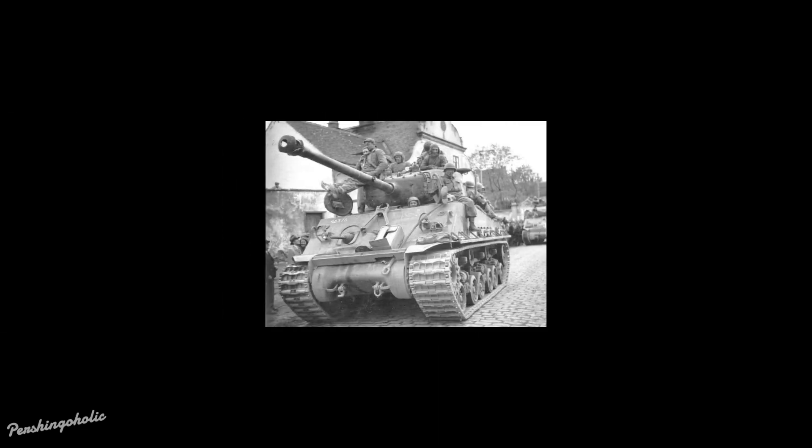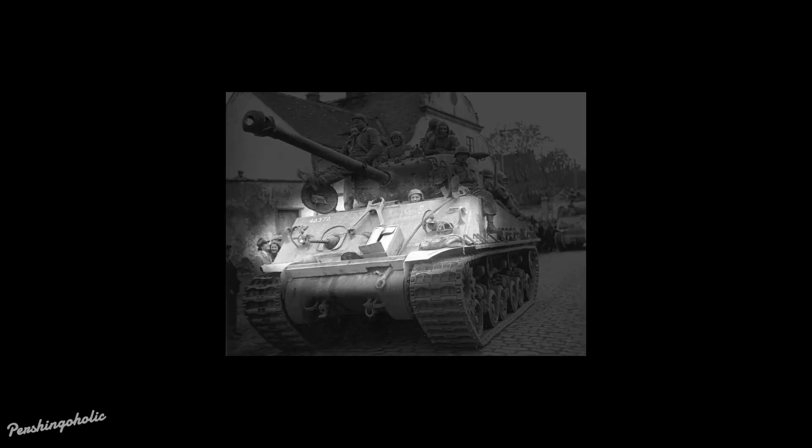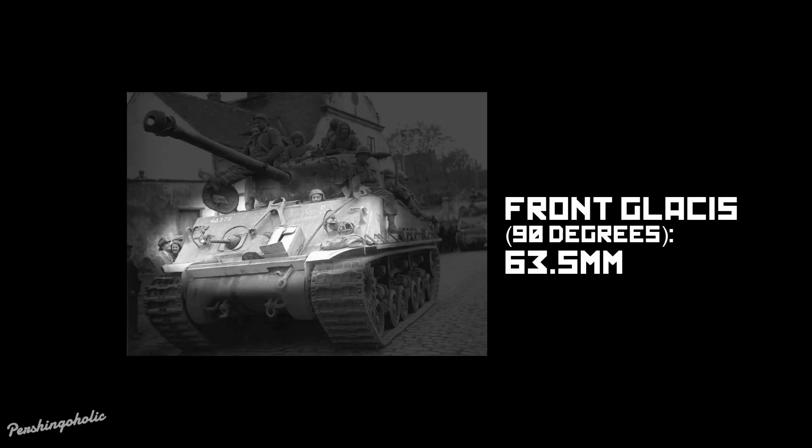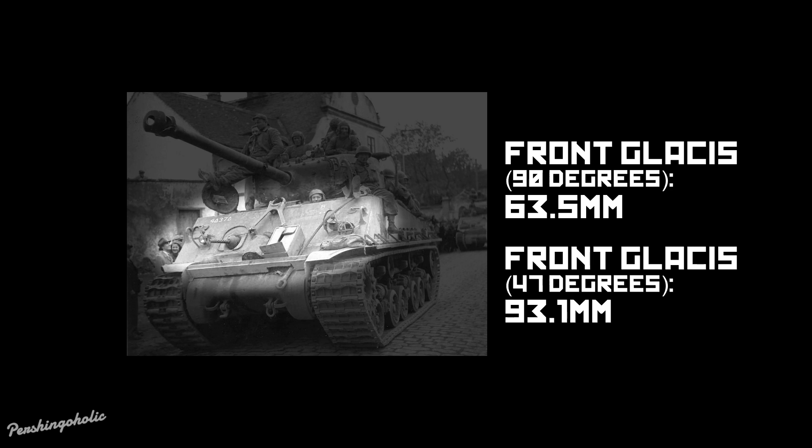Pulling this example into a tank, you can tell that having sloped armor would be better because the shell has to penetrate through more material. A good example of this would be on the M4A3 Sherman. The armor thickness of the front glacis of the Sherman is 63.5 millimeters, but at 47 degrees, the effective armor of this tank is 93.1 millimeters. A 30 millimeter difference can make it harder for a shell to penetrate.